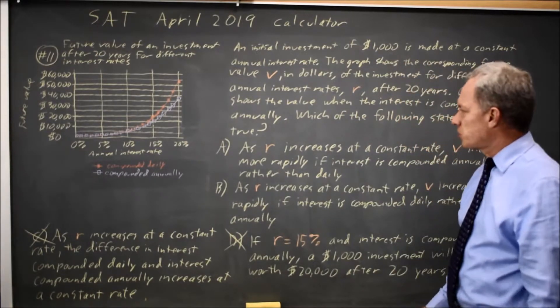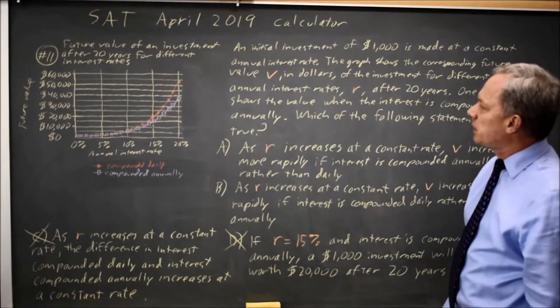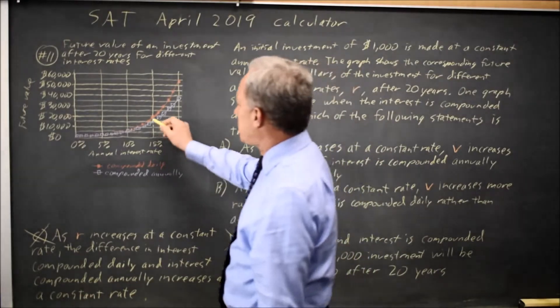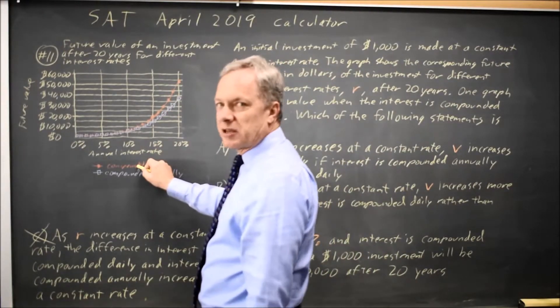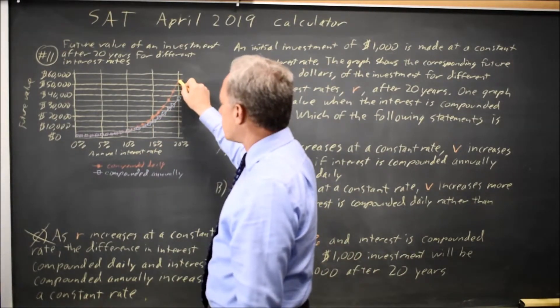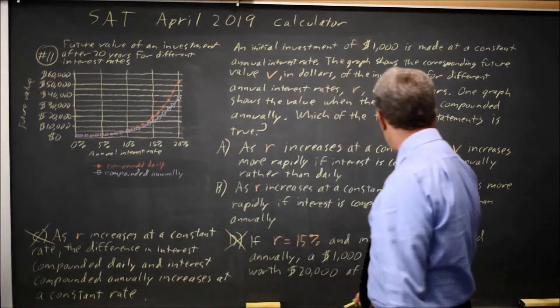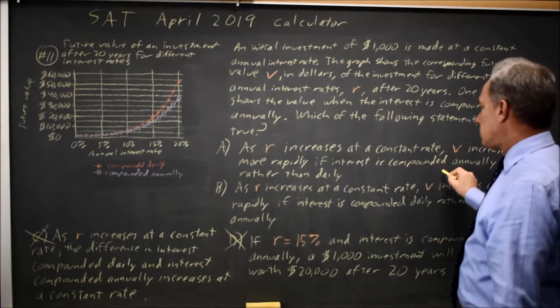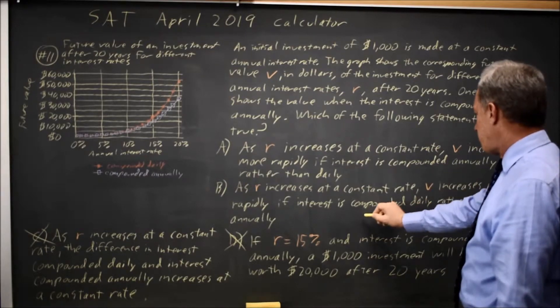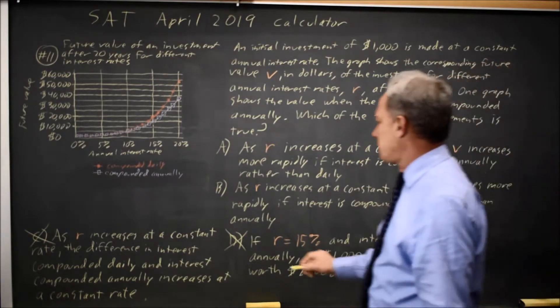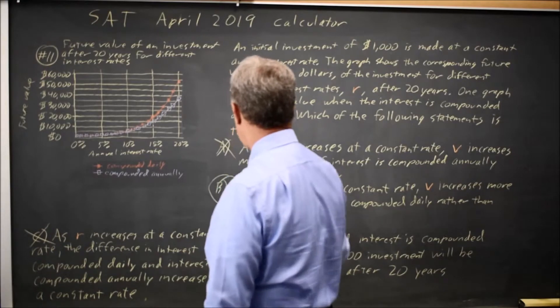So we're deciding between A and B. If you look at the graphs, daily—the pink as I've drawn it—is growing more rapidly than annually, the purple. So the answer that says it increases more rapidly with daily rather than annually would be choice B and not choice A.